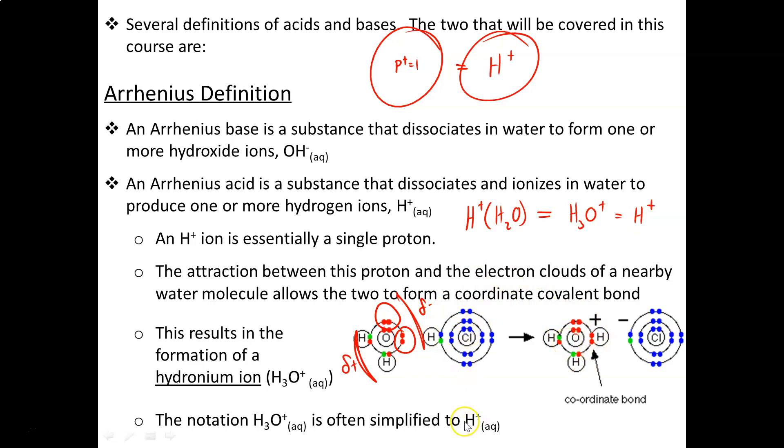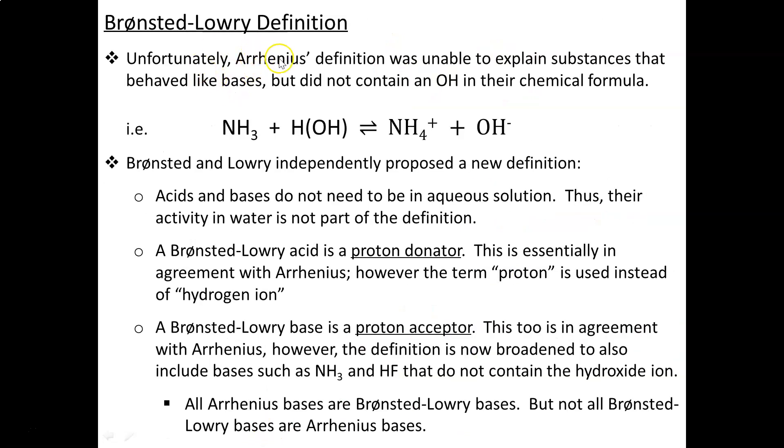So be aware, anytime you see an H+ in the textbook, what they really mean is hydronium, H3O+. Unfortunately, Arrhenius' definition was a little too specific. It was unable to explain substances that behaved like bases but did not contain the OH in their chemical formula. For example, ammonia.